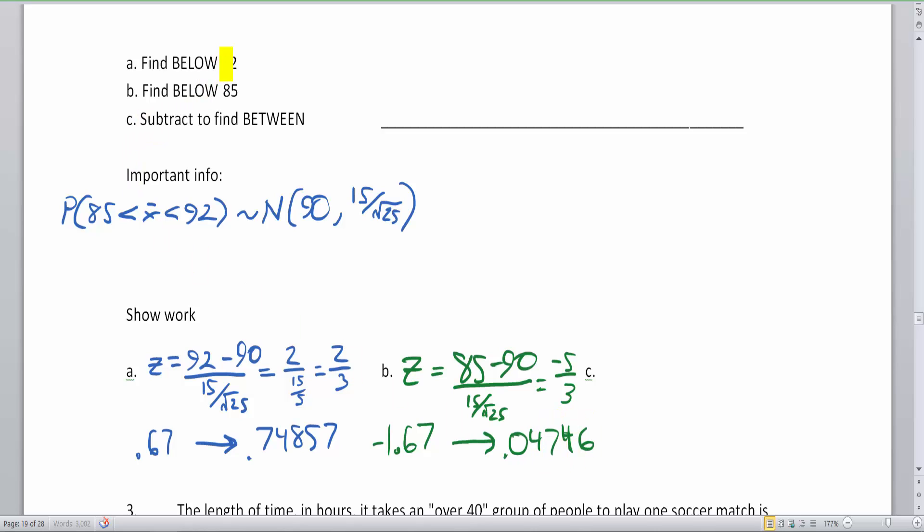This gives me 0.04746. So that's my part B. Part A is to go below 92. Part B is to go below 85. And then subtract to find in between.